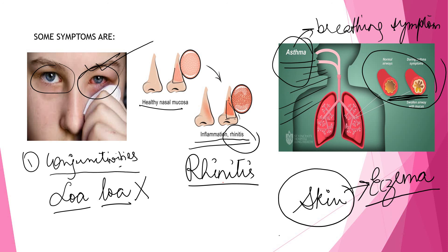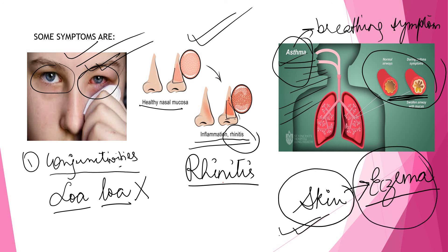To summarize: infection of the eyes by allergens causes conjunctivitis; infection of the nose by allergens causes rhinitis; if allergens enter the air pathways of the person, that causes asthma — a breathing disorder; and when allergens cause some irritation in the skin, that is called eczema. We shall see further chapters in the next video.